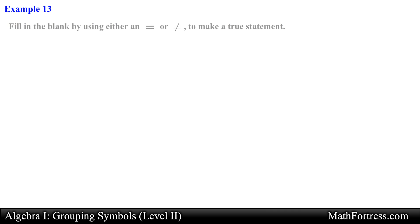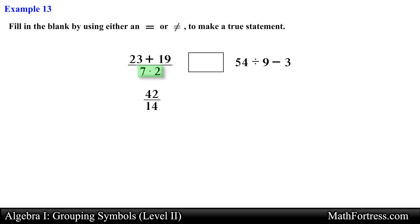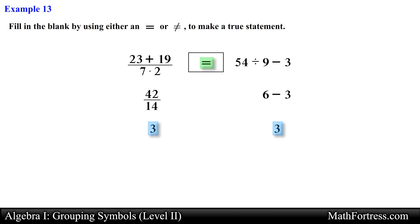Let's try a different type of problem: fill in the blank using either an equal sign or a does-not-equal sign to make a true statement. We simplify both sides. On the left, we simplify the numerator: 23 plus 19 equals 42, and the denominator equals 14. Then 42 divided by 14 equals 3. On the right, there are no grouping symbols, so we divide 54 by 9 to get 6, then subtract 3 to get 3. Both sides equal 3, so we use an equal sign.